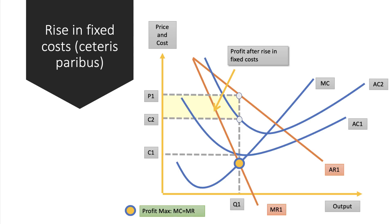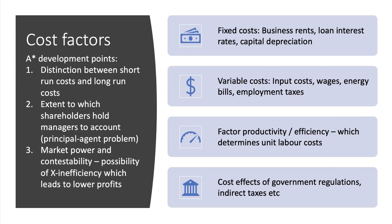This diagram shows the impact of an increase in fixed costs - students often get this wrong. An increase in fixed costs causes average cost to shift upwards, but there is no change in marginal cost. Therefore output stays at Q1, but total profit falls from what it was before.